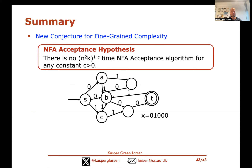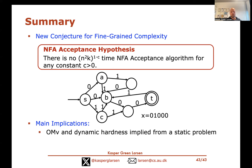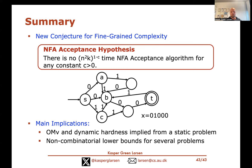In summary, the main contribution of our work is to introduce the NFA Acceptance Hypothesis: that you cannot beat O(n² · k) time by a polynomial factor for determining acceptance of a string on a non-deterministic finite automaton. The main applications are: implying the OMV conjecture from a static problem (yielding hardness for many dynamic problems), and giving new non-combinatorial lower bounds for several problems including Word Break. Thanks for listening.